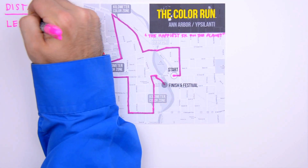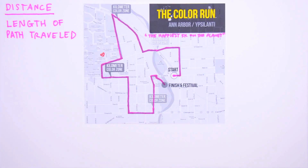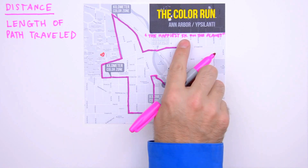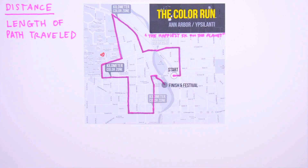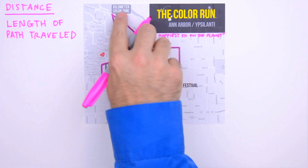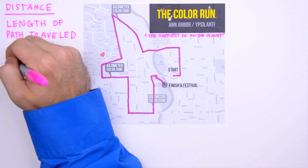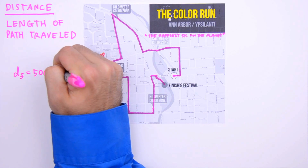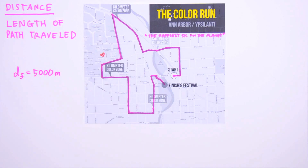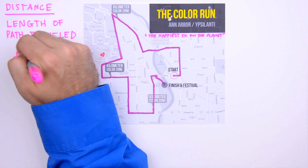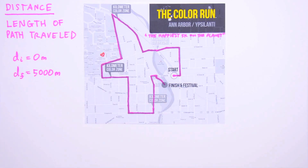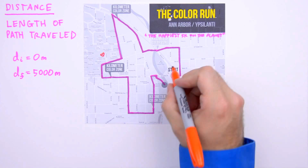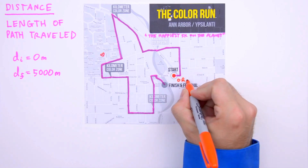Distance is simply the length of the path traveled by the body in question — in a car, distance is measured by an odometer. The Color Run is a 5k race, meaning the length of the path traveled from starting line to finish line is 5 kilometers. We'll write this in SI units: final distance d-sub-f equals 5,000 meters. This implies the initial distance d-sub-i is 0 meters. Implicit in these distances is the location of our origin — the starting line — which we'll mark on our map along with the direction of north.